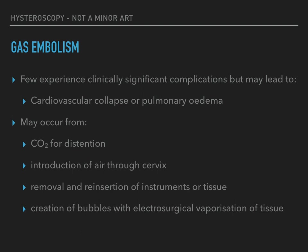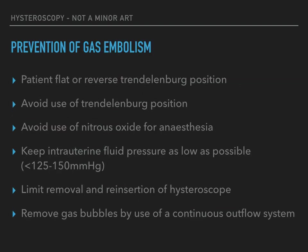Gas embolism may result in cardiovascular collapse or pulmonary edema, but few hysteroscopy patients experience clinically significant cardiac or pulmonary complications. Gas embolism may result from use of carbon dioxide for distension, or from introduction of air through the open cervix with removal and reinsertion of instruments, or through creation of gas bubbles with electrosurgical vaporization of tissue. Preventative steps include keeping the patient in flat or reverse Trendelenburg position, avoiding Trendelenburg position and the use of nitrous oxide for anesthesia, purging air from all tubing prior to insertion into the uterus, maintaining intrauterine pressure at less than 125 to 150 mmHg, limiting removal and reintroduction of the hysteroscope, and removing intrauterine gas bubbles, ideally with a continuous outflow system.